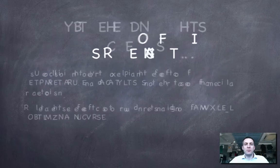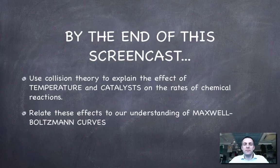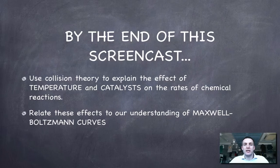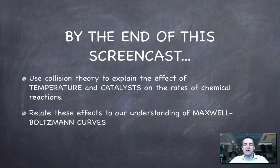By the end of this film you'll have used collision theory to explain the effect of temperature and catalysts on the rates of chemical reactions. In addition to collision theory, we'll also tie this into kinetic theory and relate these effects to our understanding of the curves covered in the fourth film, called Maxwell-Boltzmann curves.